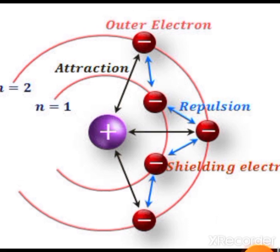The shielding or screening effect is poor for d and f electrons. For gallium, indium, and thallium, these elements have d and f electrons. The electrons in the last orbital are different due to this poor shielding effect.